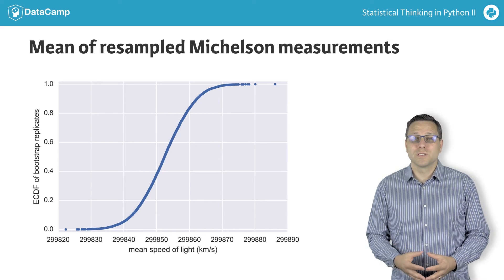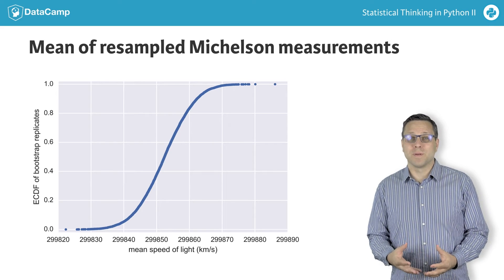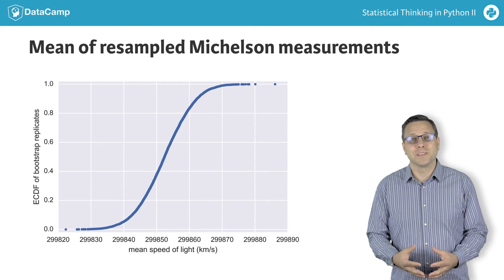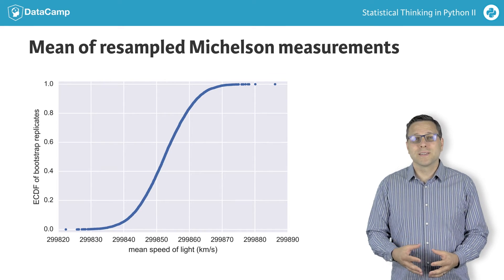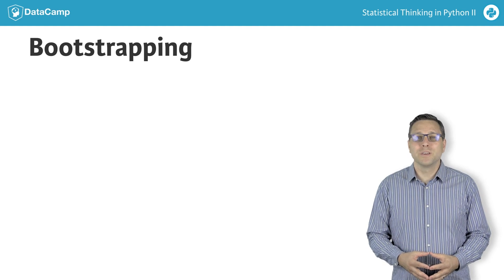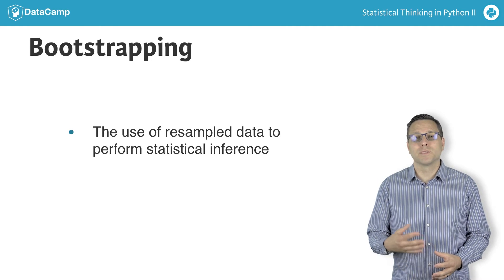We can use these results to plot an ECDF, for example, to get a picture of the probability distribution describing the summary statistic. This process is an example of bootstrapping, which more generally is the use of resampled data to perform statistical inference.